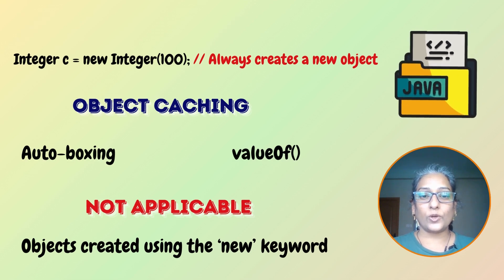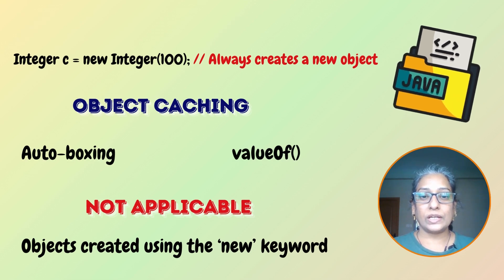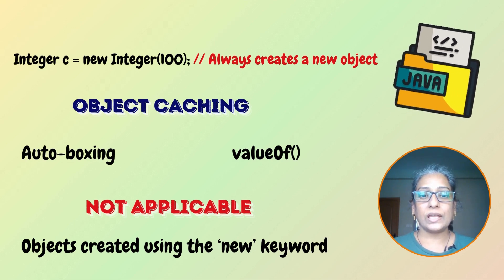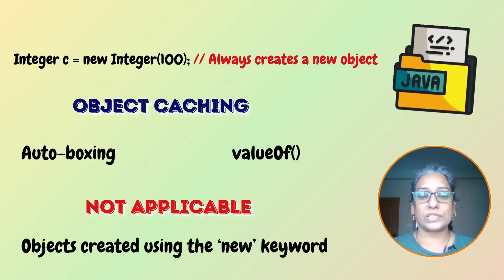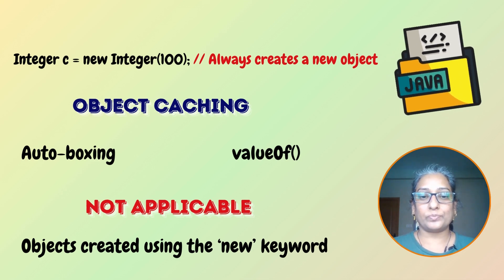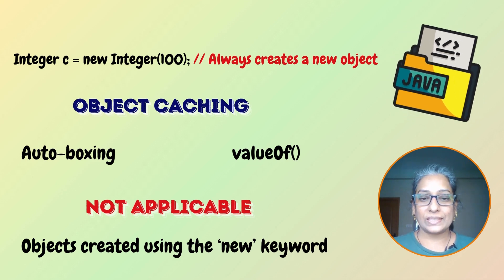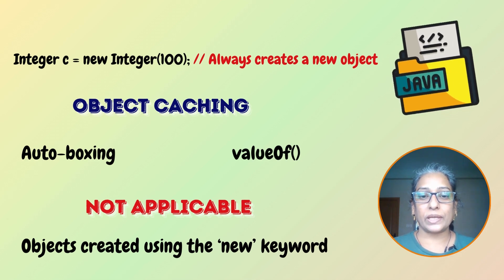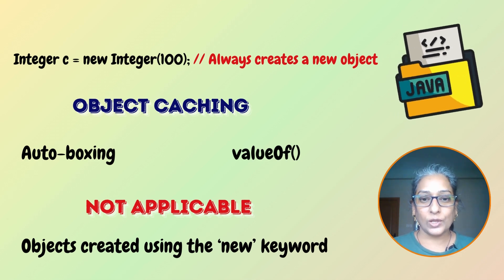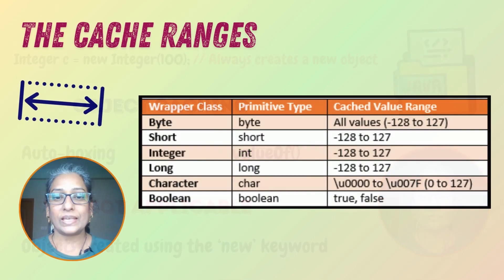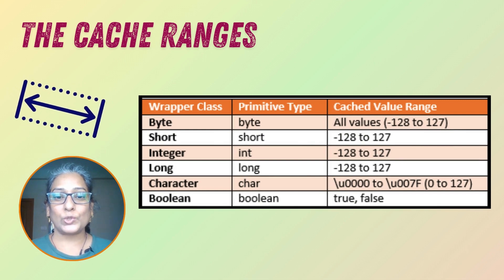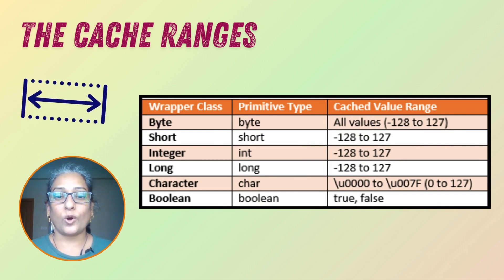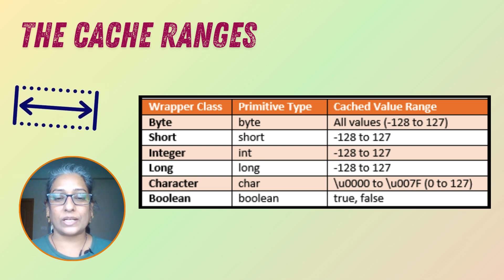When we create an Integer object using the new keyword and the constructor, Java always creates a new object regardless of the value — the object caching mechanism is not used. Here is a simplified table showing the caching ranges for the caching mechanism of various wrapper classes in Java.